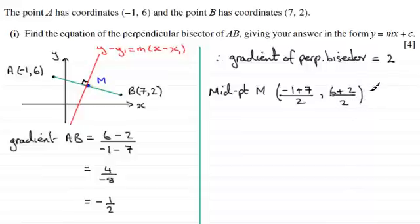And what do we get? Well, -1 add 7 is 6, divided by 2, which is 3. And then 6 add 2 is 8, divided by 2 is 4. So, we've got M with coordinates then of (3, 4).